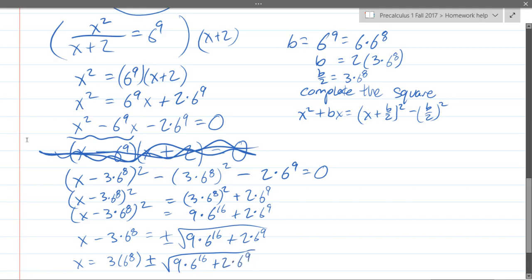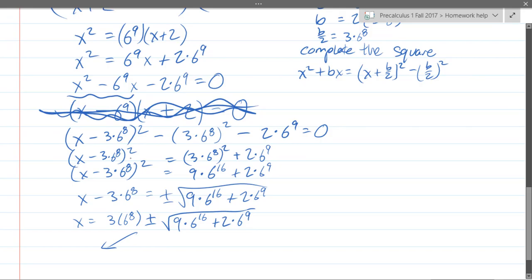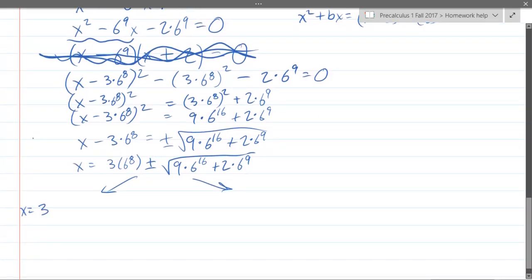This should be what you get if you went quadratic formula. Now, we do have two answers here. Generally, the positive one is the one you want to use. One of these is likely to be negative because clearly that's a positive number plus or minus whatever this value is. If you have a calculator, you know what it is. Most likely, one of these two, the plus or the minus, will be negative. So I'll write this out: 3 times 6 to the 8th minus 9 times 6 to the 16th plus 2 times 6 to the 9th, or x equals 3 times 6 to the 8th plus square root 9 times 6 to the 16th power plus 2 times 6 to the 9th power.